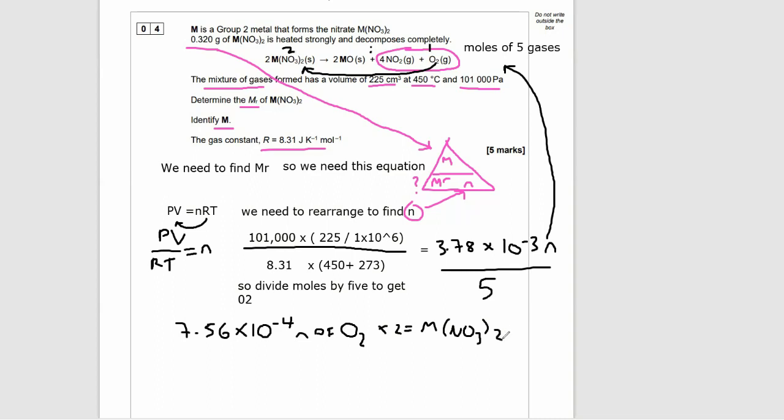That gives me my moles of metal nitrate, which is 1.51 times 10 to the minus 3. Now, all we need to do is whack that into the M over MR equals n equation. To find the MR, we take the mass, which is 0.320 grams, divide it by the moles, which is 1.51 times 10 to the minus 3, and we're going to get the MR. Our MR should come out about 211.9.